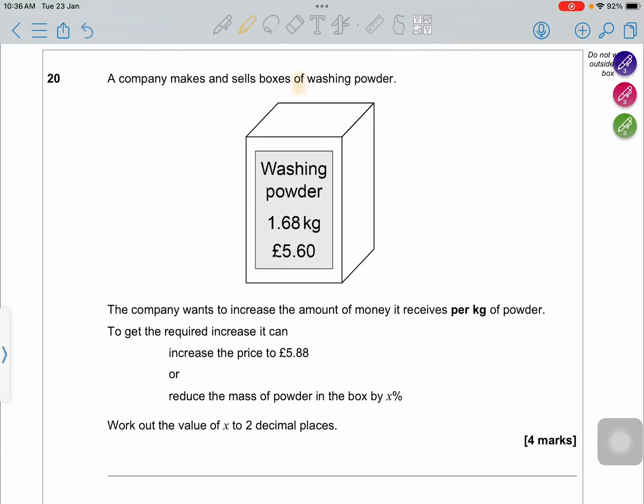A company makes and sells boxes of washing powder. 1.68 kg costs £5.60. Now the company wants to increase the amount of money per kg of powder to £5.88.